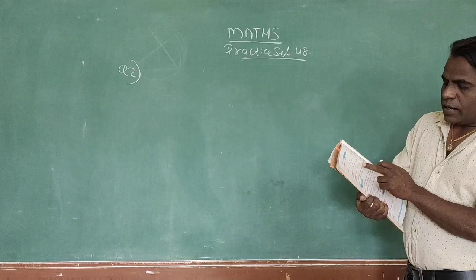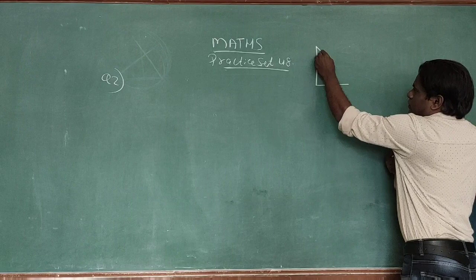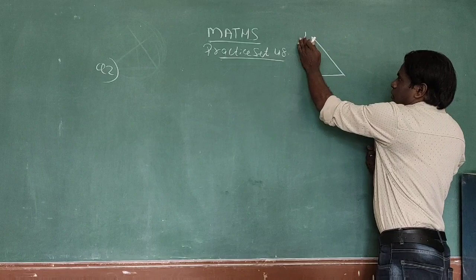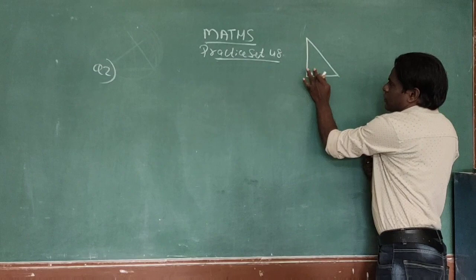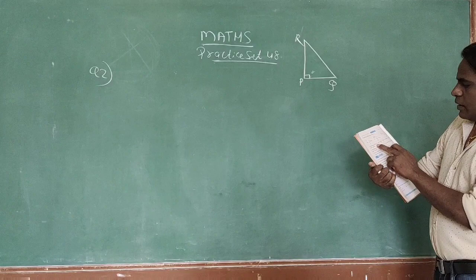Now question number 2 is also about a right angle triangle. The name of the triangle is PQR, and angle P is 90 degrees. So this is P, Q, and R.